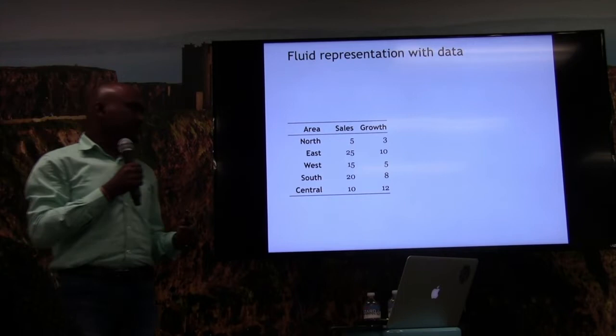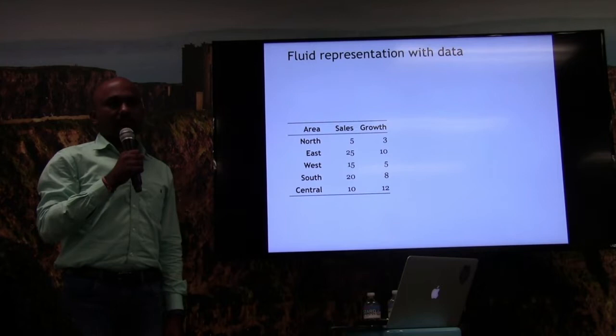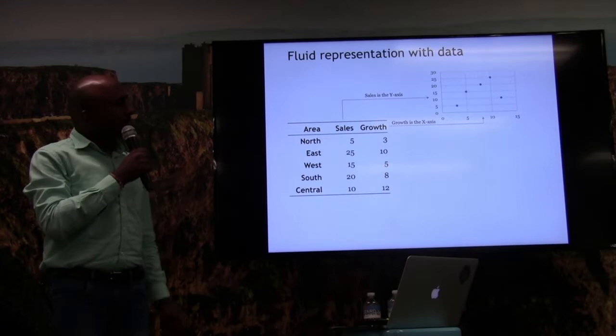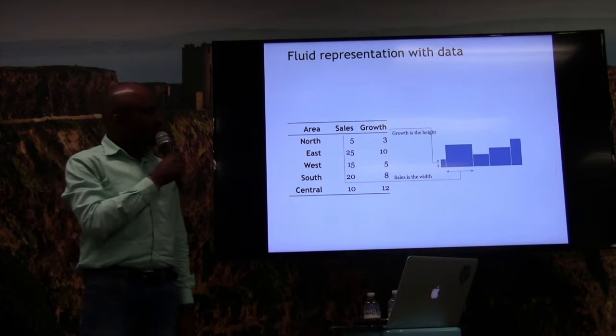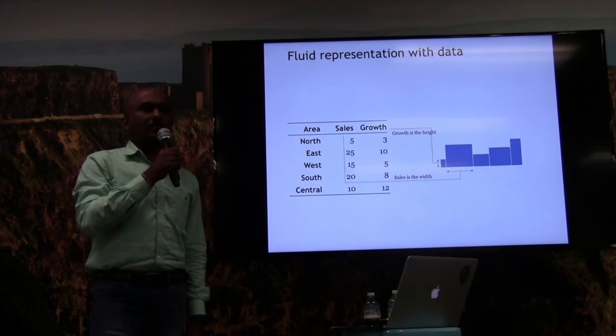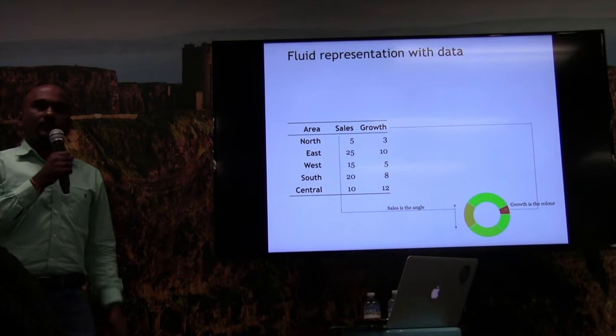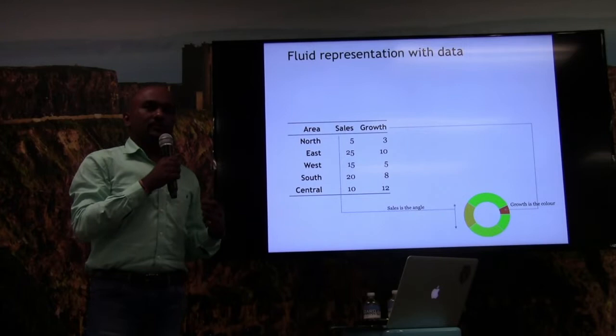If we take a sample table with sales and growth numbers, what can we do with it? We can present it by taking growth as the x-axis and sales as the y-axis — this shows the relationship and happens to be a scatter plot. The same table can be presented with growth showing the height and sales showing the width, ending up as a Mekko plot, a variant of the bar chart. We can also change it by using sales for the angle and growth for the column, in which case it becomes a donut chart. We've used different encodings for the same data.